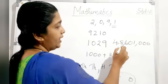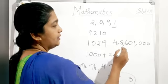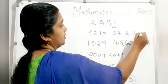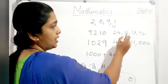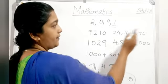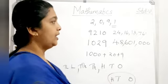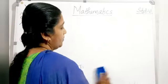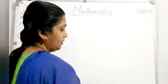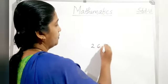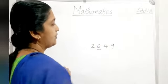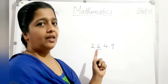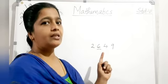For example: 48,601,000 in international notation. In Indian system: 24 crore, 16 lakh, 13,761. Place value depends on the position of the digit — for example, in 2609, the place value of 6 is 600. But the face value of 6 is always 6. The place value and face value of 0 is always 0.